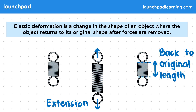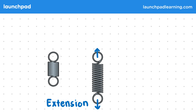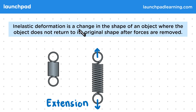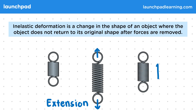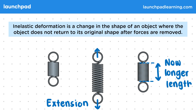But are all deformations elastic? Inelastic deformation is a change in the shape of an object where the object does not return to its original shape after forces are removed. This example involves different springs. The spring is extended again but instead, when the spring is released, it is now longer. So this deformation is inelastic as the spring is now longer than it was before when there are no forces acting on it.